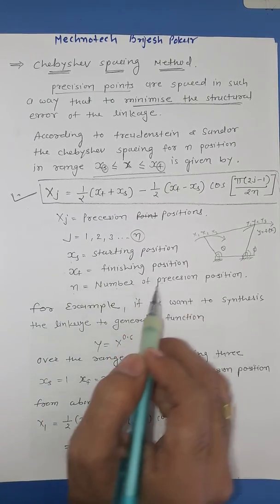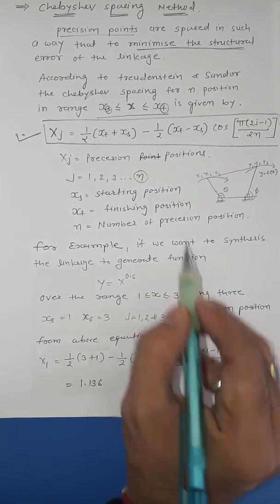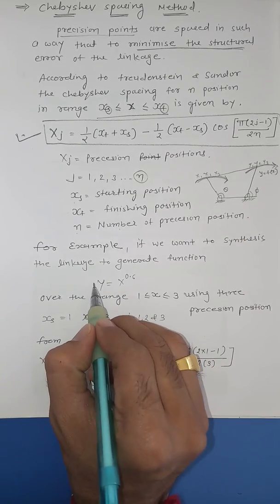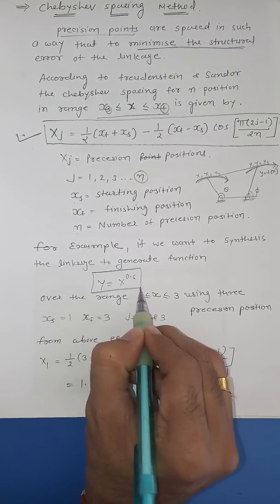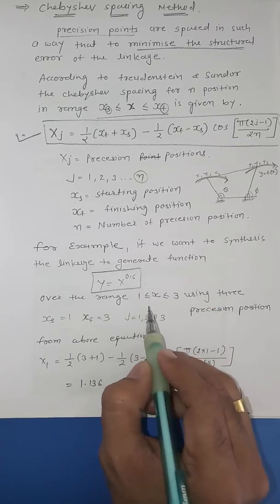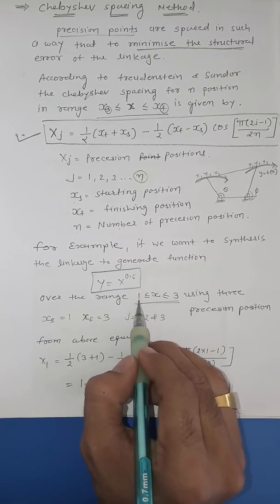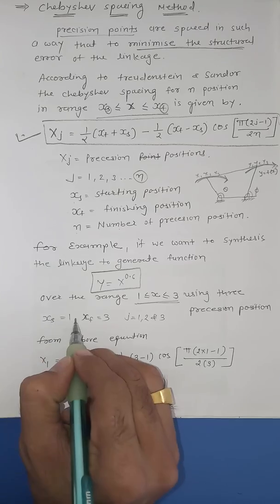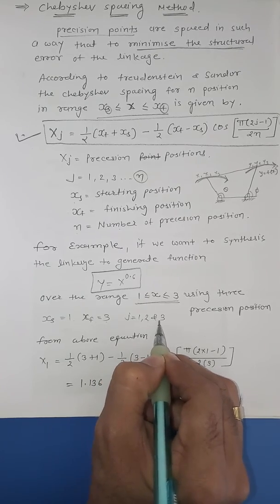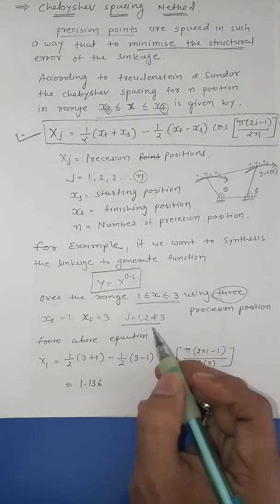For example, if we want to synthesize a linkage to generate a function where y is a function of x — here y = x^0.6 — there are three precision points: one, two, and three. So xs = 1 (starting position), xf = 3 (finishing position), and j = 1, 2, 3 for a total of three precision positions.